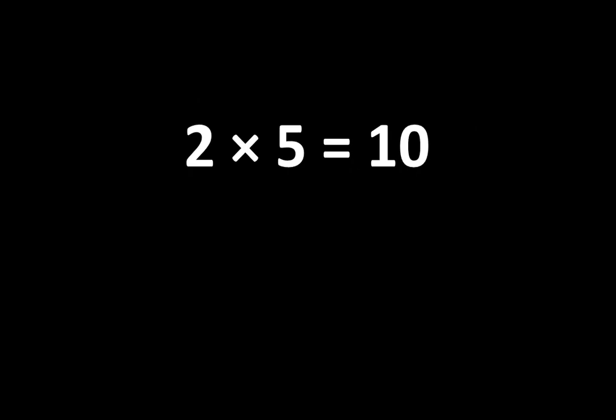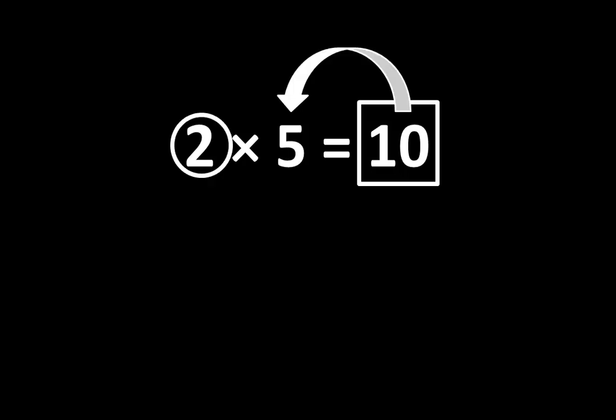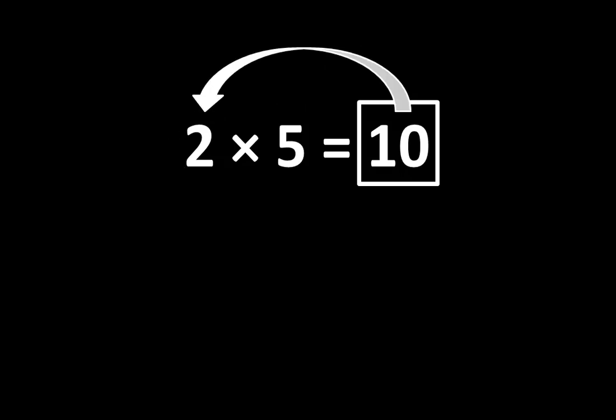When you examine 2 times 5 is equal to 10, you may notice that 10 is greater than 2, and 10 is also greater than 5. But how many times greater? 10 is 5 times greater than 2, and 10 is also 2 times greater than 5. As you can see, there are many relationships among these numbers.